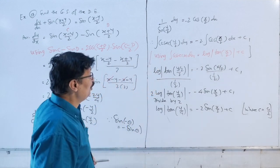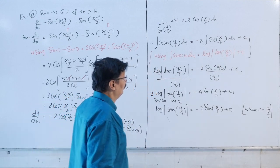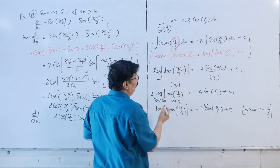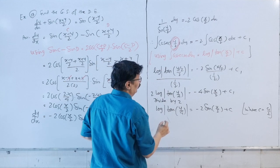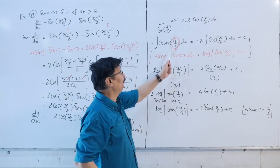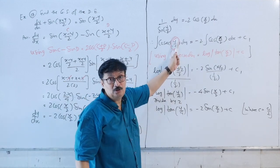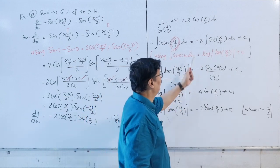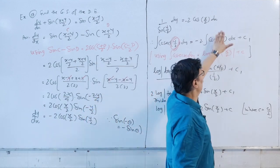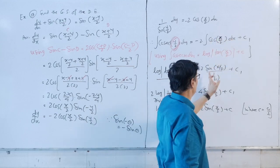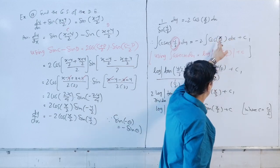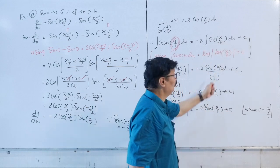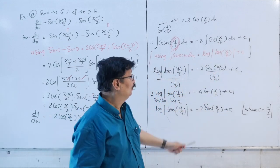So the left side becomes log|tan((y/2)/2)| = log|tan(y/4)|. For the substitution u = y/2, du = 1/2. On the right side, integrating cos(x/2): let u = x/2, du = 1/2, giving sin(x/2) divided by 1/2. So the right side is minus 2 times sin(x/2) divided by (1/2) plus C, which equals minus 4 sin(x/2) + C.